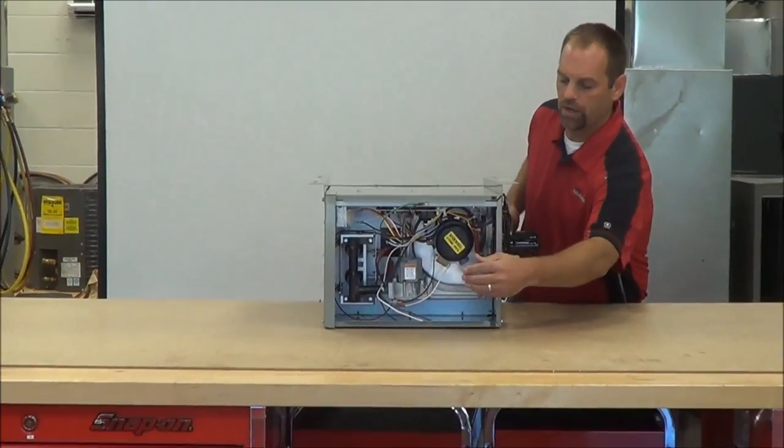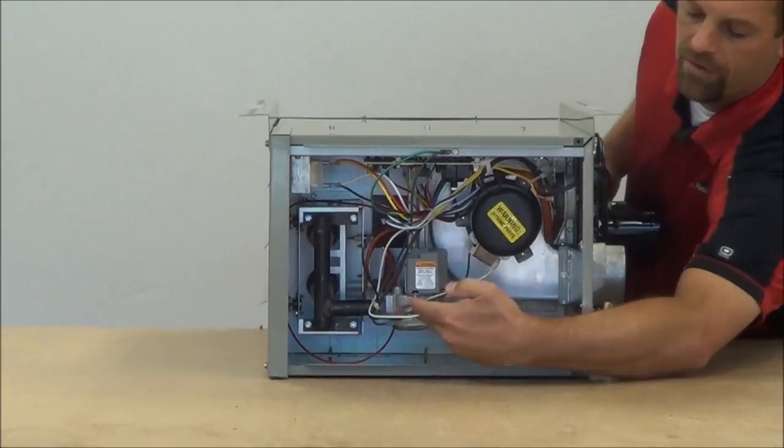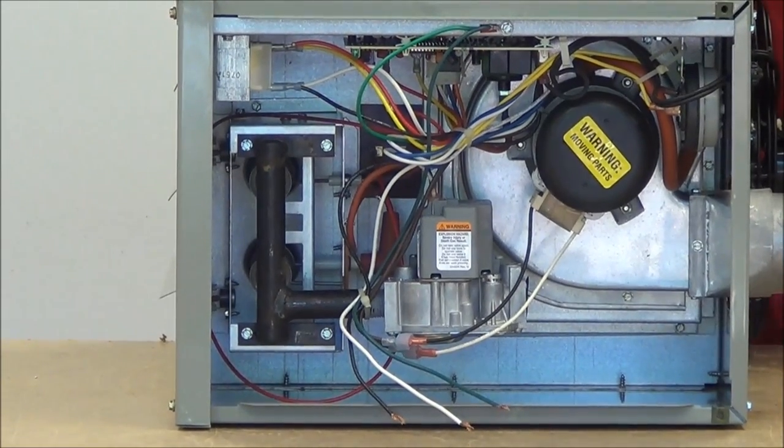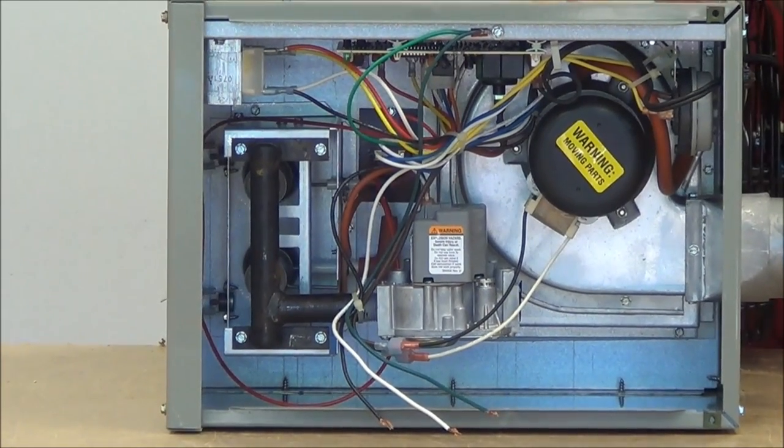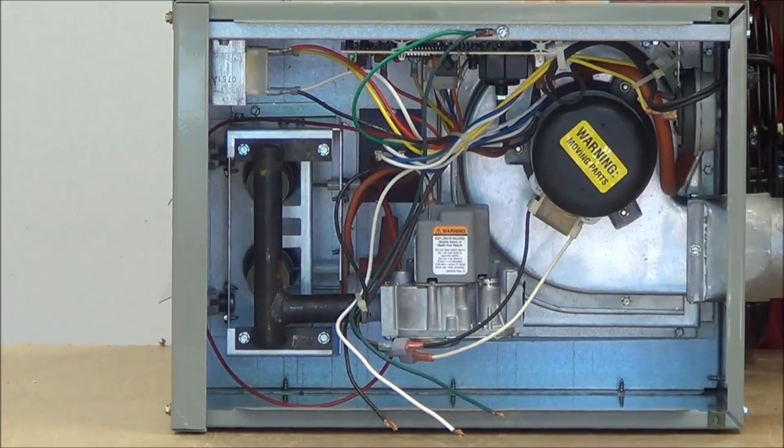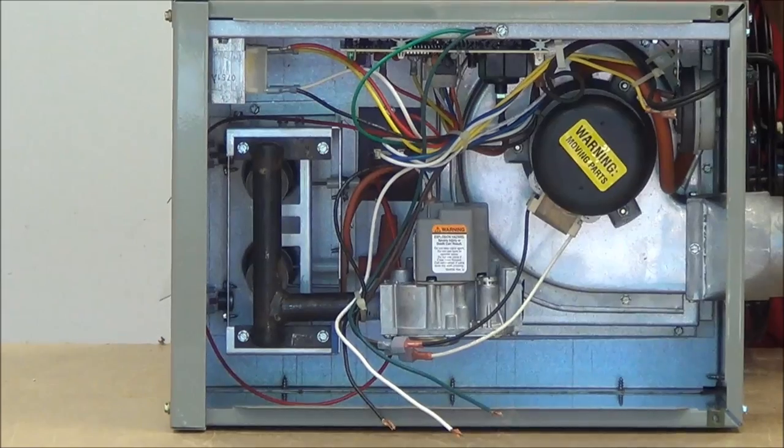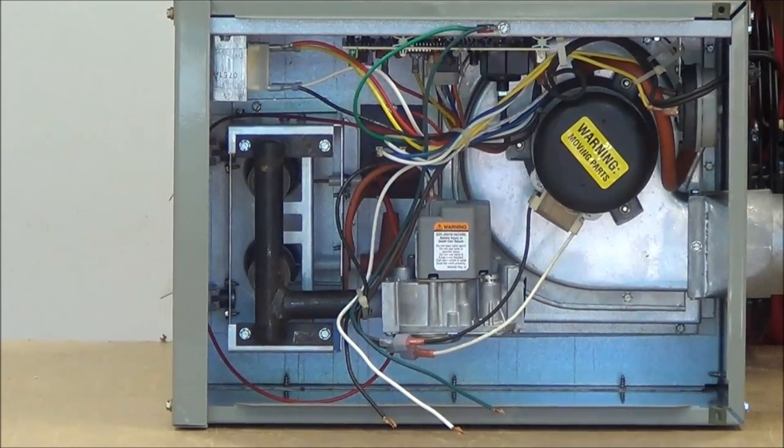So as we turn the unit, we have our incoming wires. We have a black wire, a white wire, and a green wire. Obviously our black wire should be our 115 volts in, our white wire is our common wire, and the green wire is the ground.